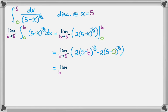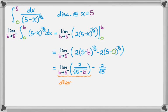After simplifying, we have the expression with 2 over the square root of (5 minus b). If b approaches 5 from the left, the denominator becomes a really tiny positive number. So you're doing 2 divided by a really tiny positive number, which blows up to infinity. Therefore, this integral diverges to infinity. We can say that it either diverges, or that it approaches infinity and is unbounded — it just keeps growing.